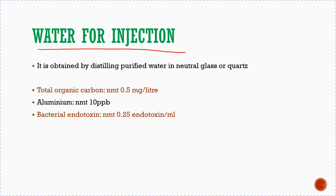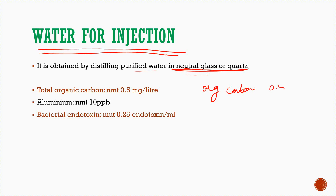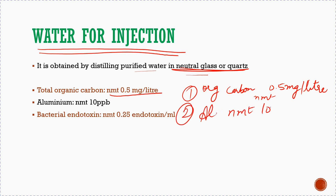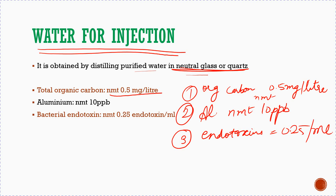The second type is water for injection. Water for injection is obtained by distillation of purified water using neutral glass or quartz containers, to minimize leaching of acids or bases. The total organic carbon standard should not be more than 0.5 mg per liter. Aluminum content should not be more than 10 parts per billion, and bacterial endotoxin should not be more than 0.25 endotoxin units per ml.